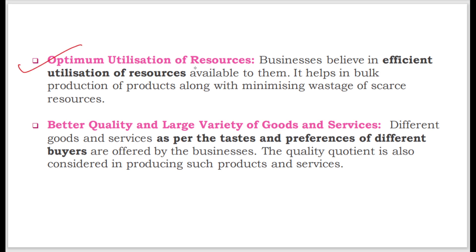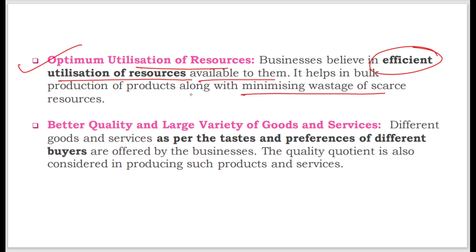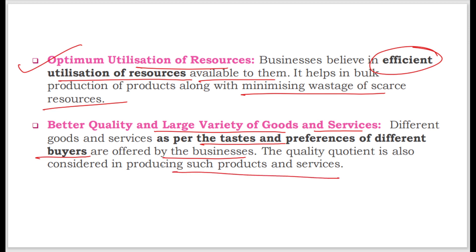Next is optimum utilization of resources. Business believes in the efficient utilization of available resources. It helps in bulk production of products while minimizing wastage of scarce resources. Next is better quality and large variety of goods and services — different goods and services as per the taste and preferences of different buyers are offered by businesses, and the quality quotient is also considered in producing such products and services.